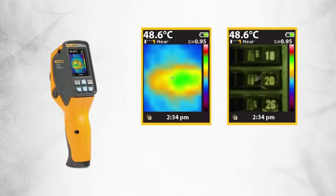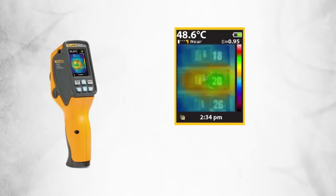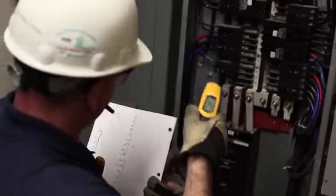Every Fluke visual IR thermometer combines a digital image and a thermal heat map overlay so you can instantly detect the exact location of a problem. Fluke visual IR thermometers save our customers time by eliminating the time consuming task of individual temperature measurements.